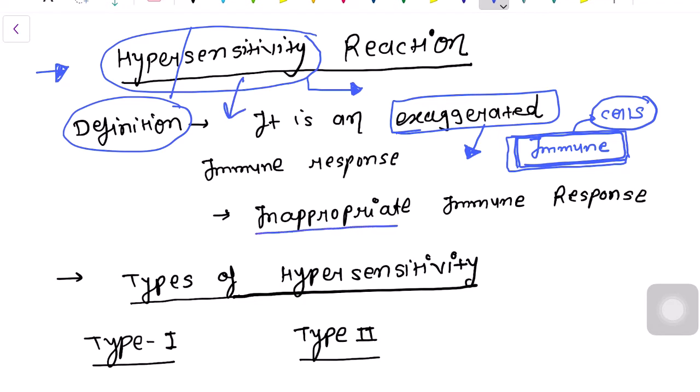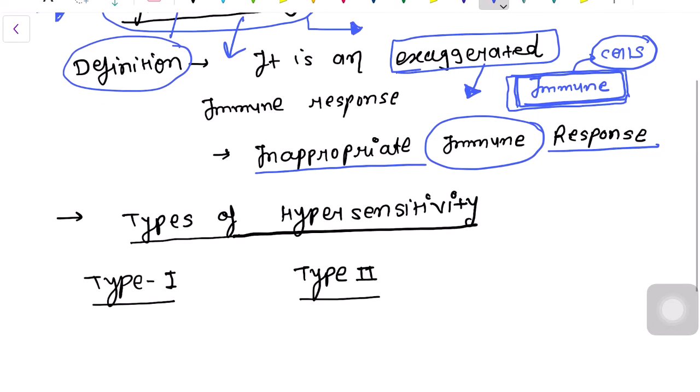It is also known as an inappropriate immune response. Sometimes in our life, when events occur, we give an exaggerated response and later realize we have reacted overly. The same thing happens with our immune system.